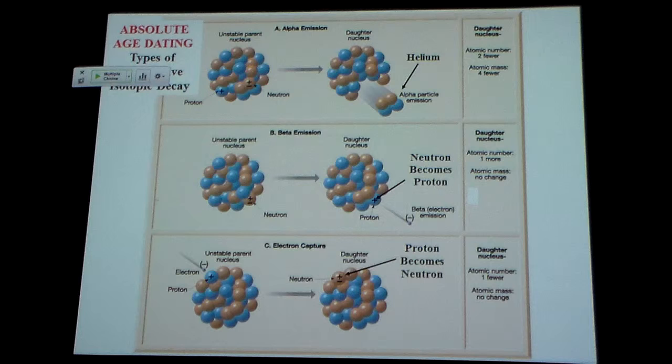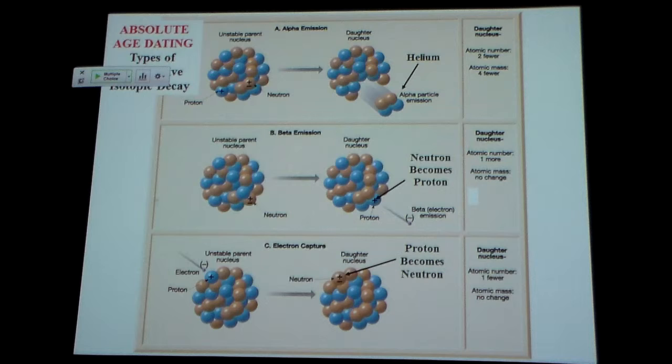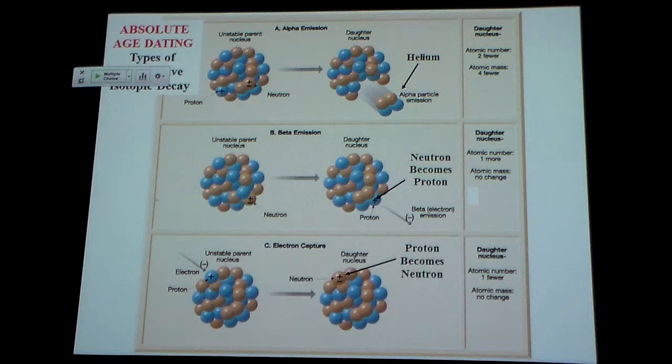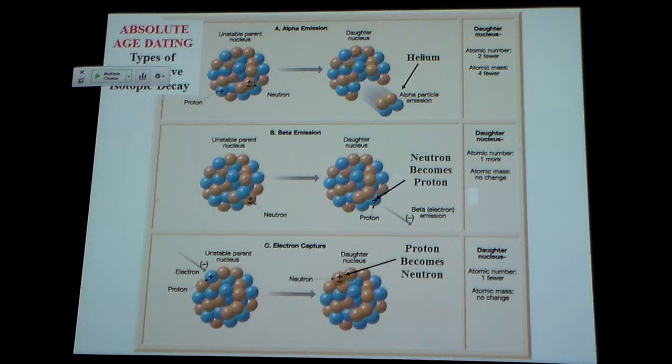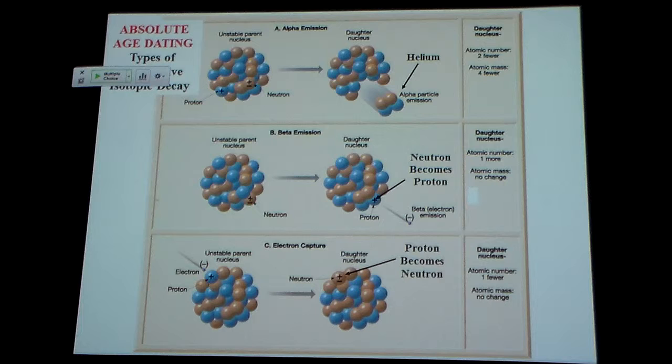So how do these isotopes, these high-energy particles, form? There are three different ways we can do this. First is what we call alpha emission. Think of this as the nucleus of an atom. The blue circles are protons, so they have a plus charge. The brown ones are neutrons and they're neutral. So I hit this thing and I force two protons and two neutrons to escape from this nucleus. Well, what is this? What has two protons in its nucleus? What element?